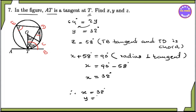So x is equal to 32 degrees, y is equal to 32 degrees, and z is equal to 58 degrees. Please like, share, and comment on this video.